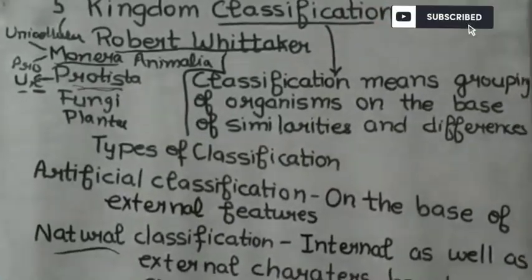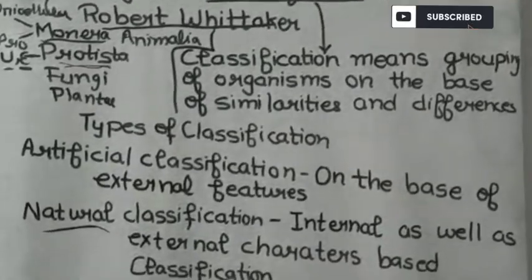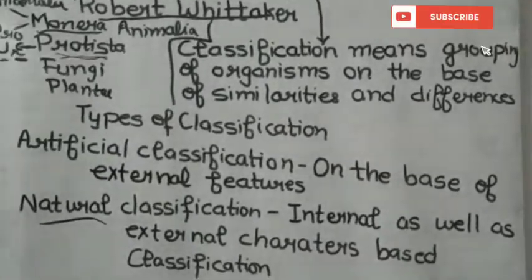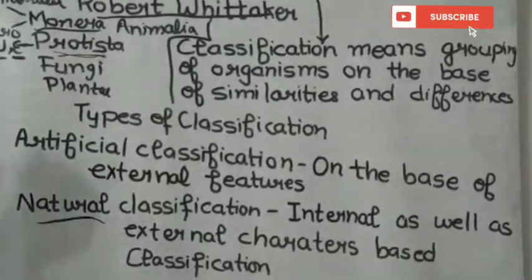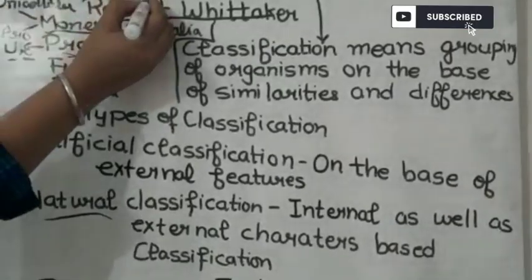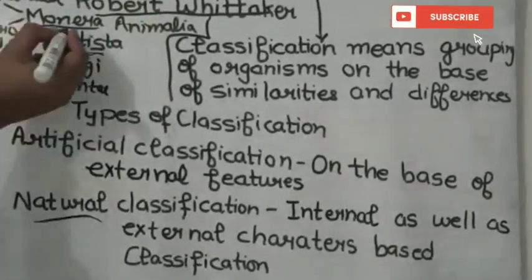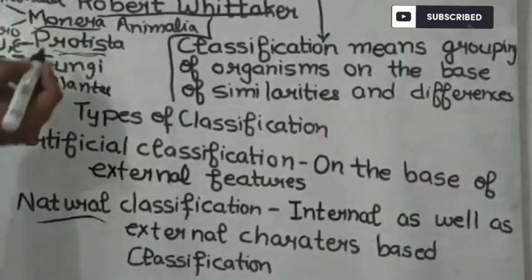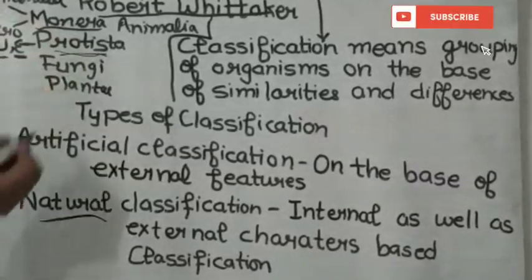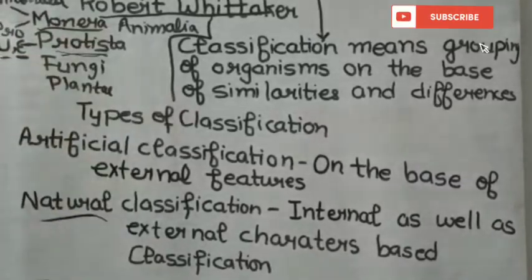As we know about the 5 Kingdom Classification, which is given by Robert Whittaker. The 5 Kingdoms are: Kingdom Monera, Protista, Fungi, Plantae, and Animalia.